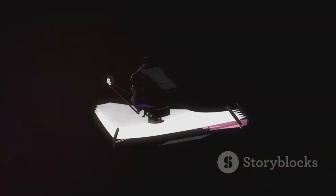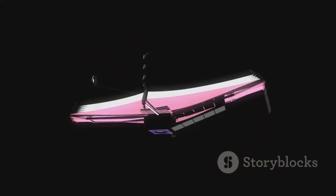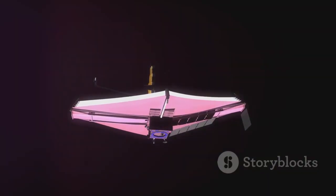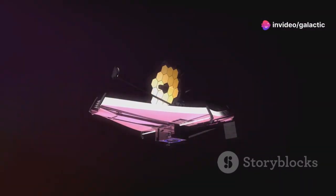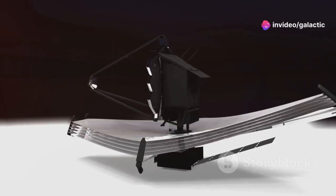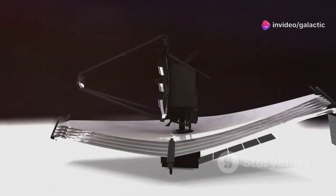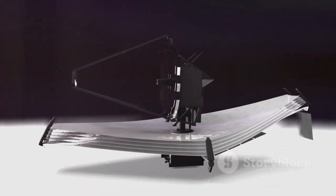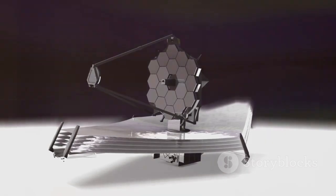Folded like cosmic origami, JWST was carefully packed to fit inside a rocket, then launched on a journey of nearly a million miles from Earth. Once in space, it performed a flawless ballet, unfurling its massive gold-plated mirror and delicate sunshield, each step a testament to human precision and daring.